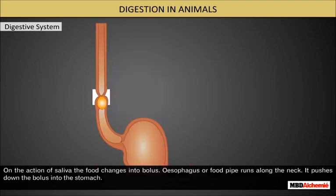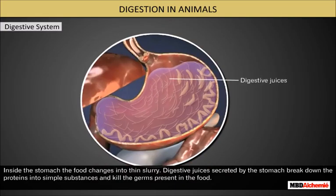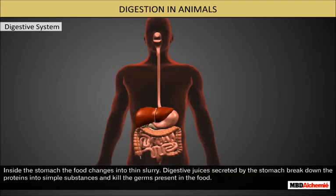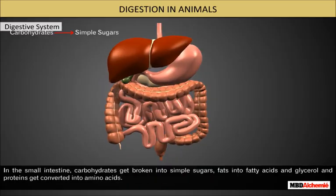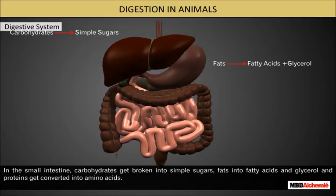The esophagus pushes down the bolus into the stomach. Inside the stomach, the food changes into a thin slurry. Digestive juices secreted by the stomach break down the proteins into simple substances and kill the germs present in the food. In the small intestine, carbohydrates get broken into simple sugars, fats into fatty acids and glycerol, and proteins get converted into amino acids.